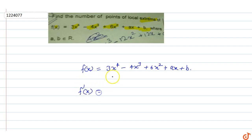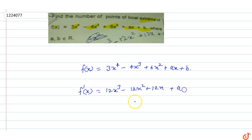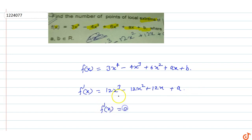So f'(x) equals 12x³ - 12x² + 12x + a. Setting f'(x) equal to zero — since a is an unknown belonging to real numbers, this equation f'(x) = 0 may have solutions depending on a.